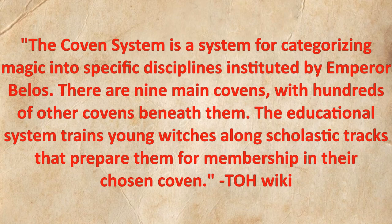The Coven System is a system for categorizing magic into specific disciplines, instituted by Emperor Belos. There are nine main covens, with hundreds of other covens beneath them. The educational system trains young witches along scholastic tracks that prepare them for membership of their chosen coven.